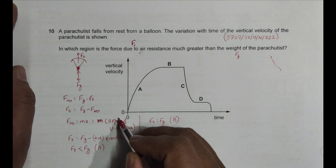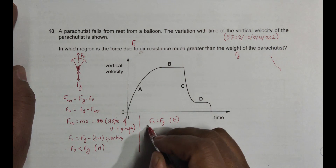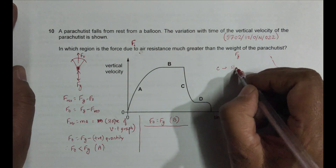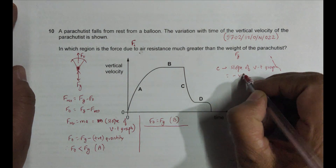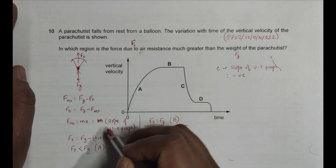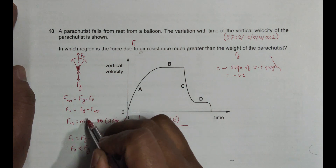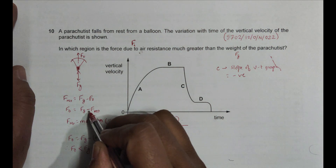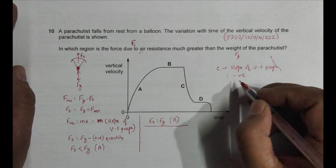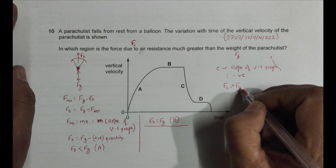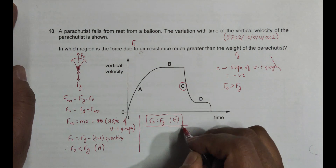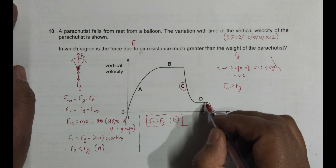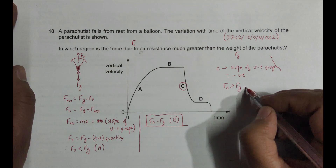In region C, the slope of the VT graph is negative. If the slope is negative, F resultant is negative. So fo equals Fg plus a positive quantity, which means fo is greater than Fg in region C. In region D the same case applies — fo equals Fg because of terminal velocity. So the answer to this question is choice number C.